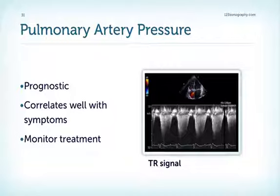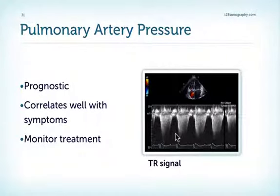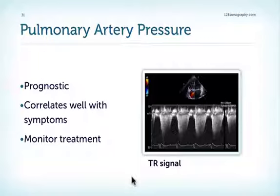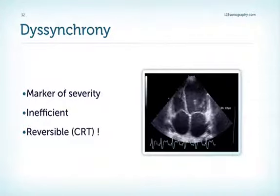Pulmonary artery pressure is equally important — it gives valuable prognostic information and correlates quite nicely with symptoms. If a patient has elevated pulmonary artery pressure in the tracing but tells you they have no or only mild symptoms, then either you made a miscalculation, recorded the wrong signal, or the patient is simply not telling the truth. It is also valuable to monitor treatment and see the effect of medical therapy such as diuretics.